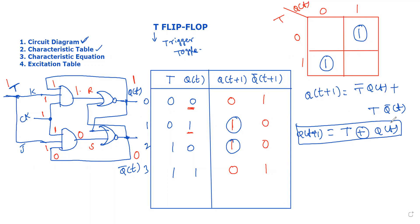This characteristic equation is equivalent to the XOR operation: Q(t+1) = T ⊕ Q(t). This is the characteristic equation for the T flip-flop, and the XOR gate is used when designing sequential circuits.